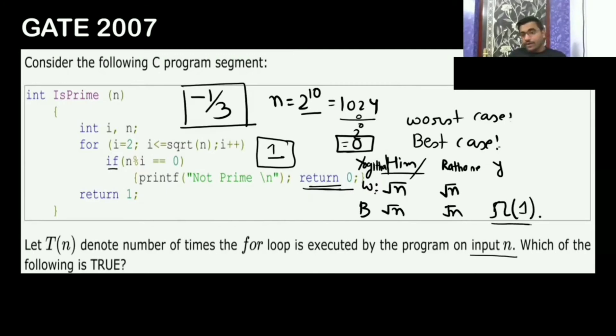Best case is going to be Omega of 1 and worst case, if your N is some prime number, it will not be divisible by 2, 3, 4, 5 like this. Then it will go like if you take N equal to 11.